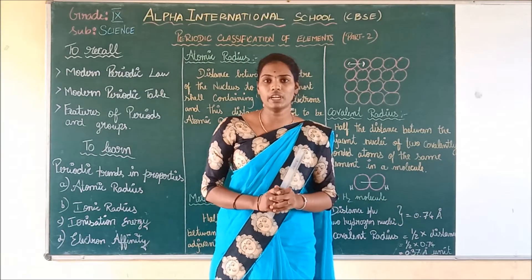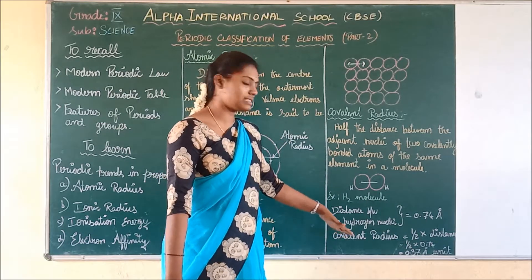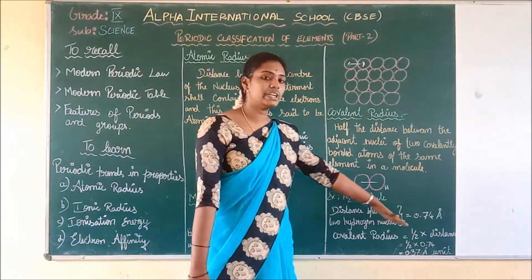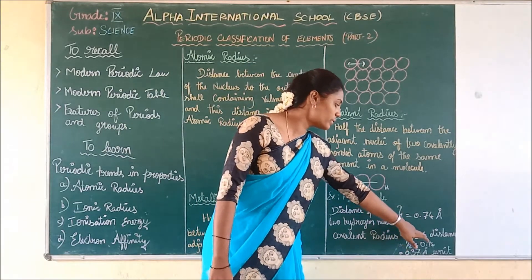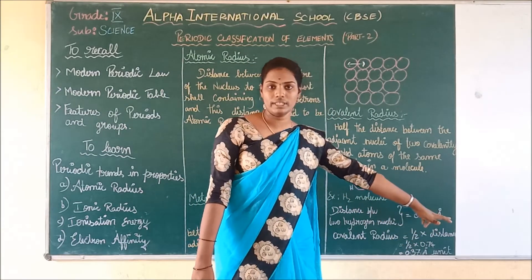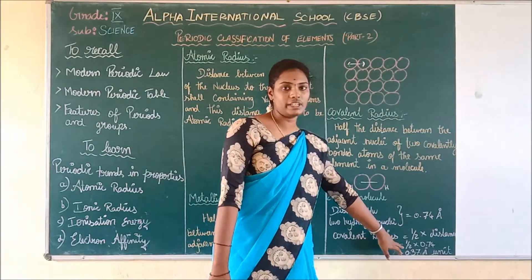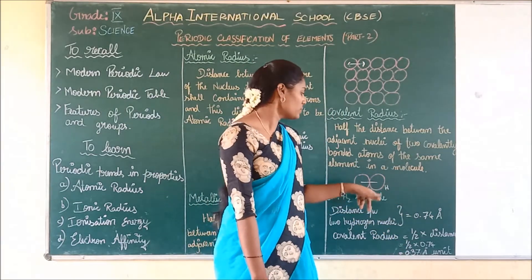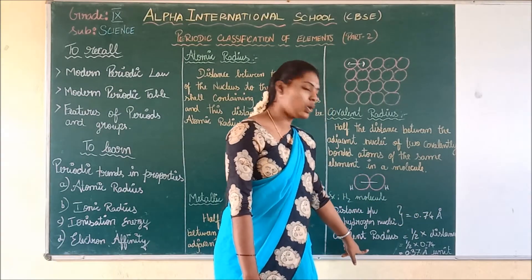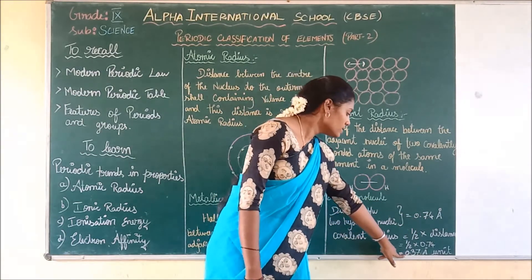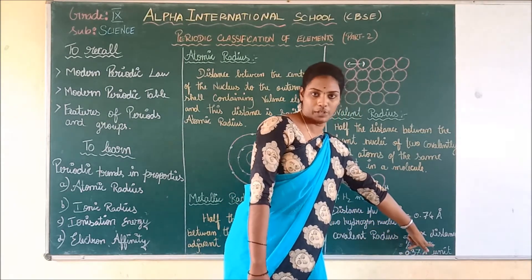How do we find the covalent radius? The covalent radius is equal to half the internuclear distance. The internuclear distance here is 0.74 Angstrom units, so the covalent radius is equal to 0.37 Angstrom units.